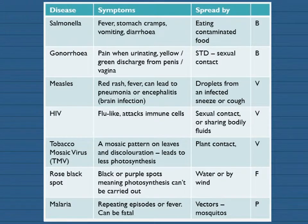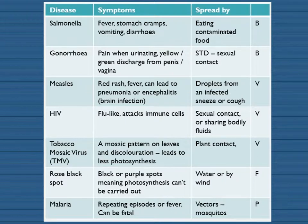In the spec they mention particular diseases that you need to understand — what the symptoms are and how they are spread and whether it's spread by bacteria, virus, fungi or protists. So the list includes salmonella and gonorrhea for bacteria; measles, HIV and tobacco mosaic virus — which is a plant virus — caused by viruses. Rose black spot is caused by fungi; I would also learn about athlete's foot in humans. And the protist is malaria. A suggestion for revision: get some cards set up with the disease, the symptoms, what it's spread by and what causes it, then test yourself or test with a friend.